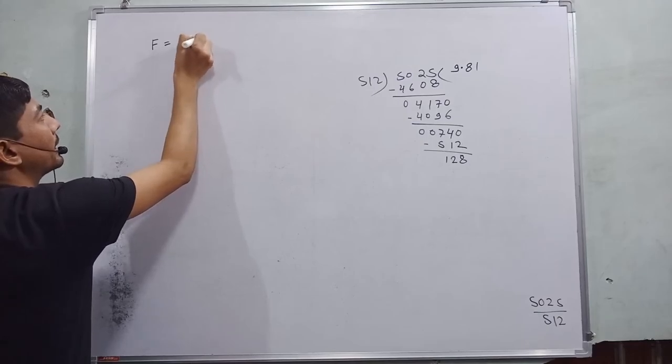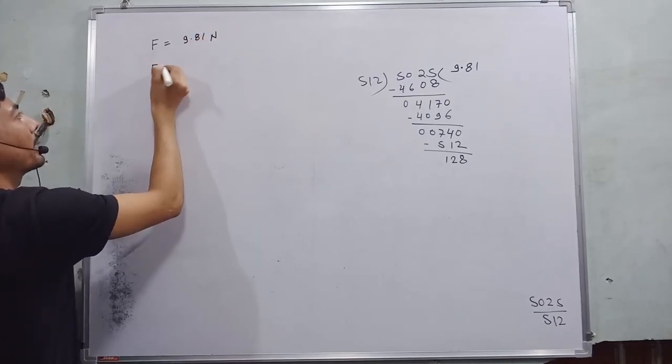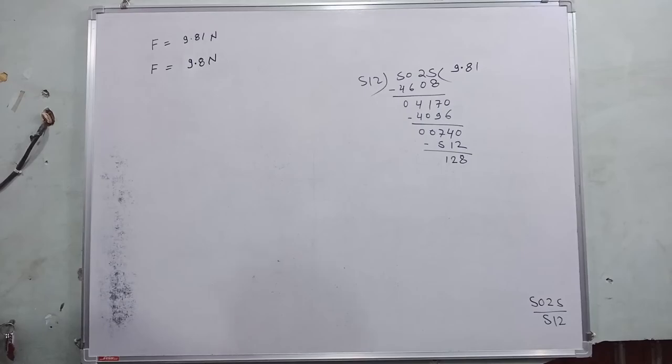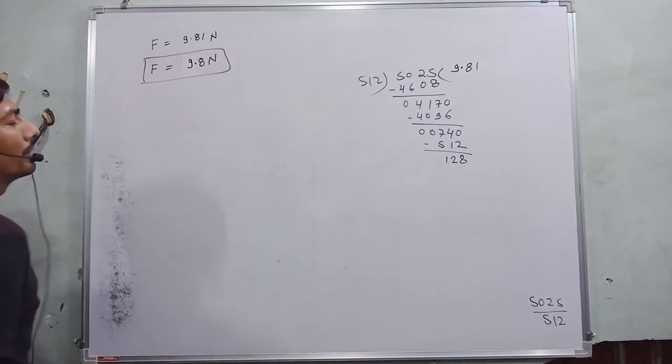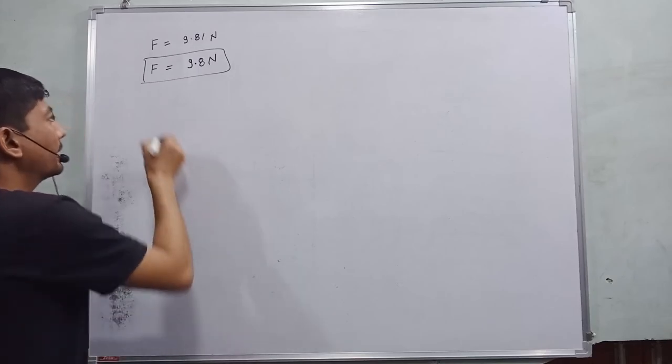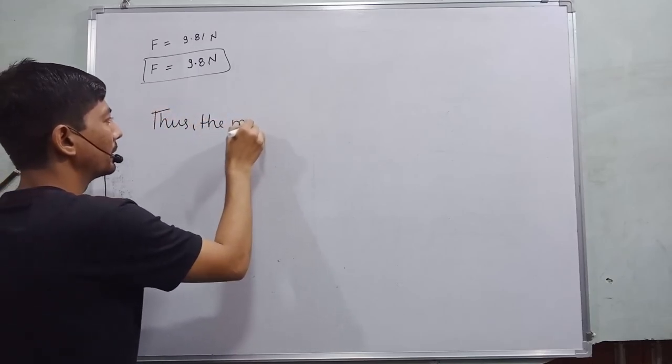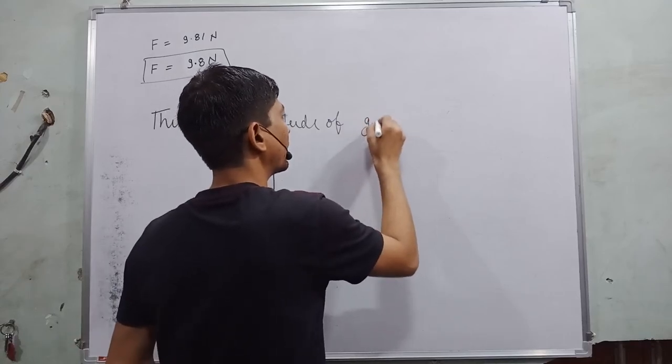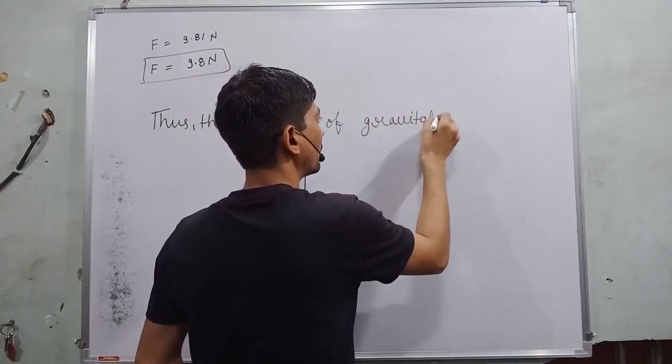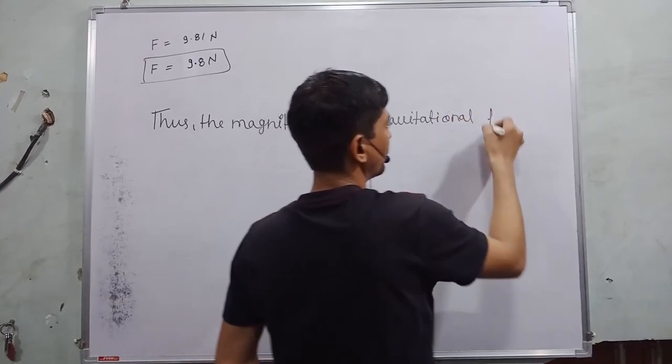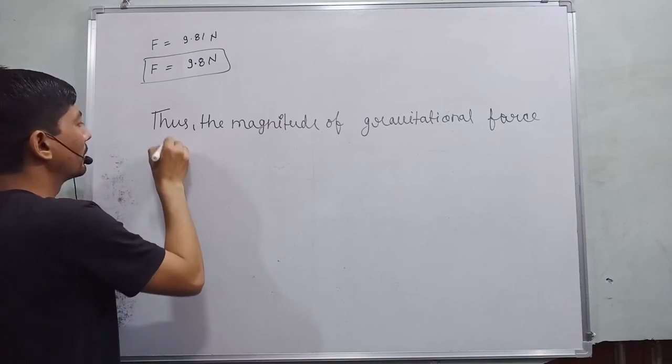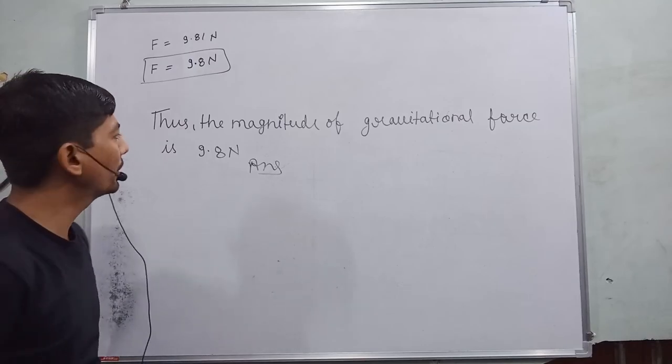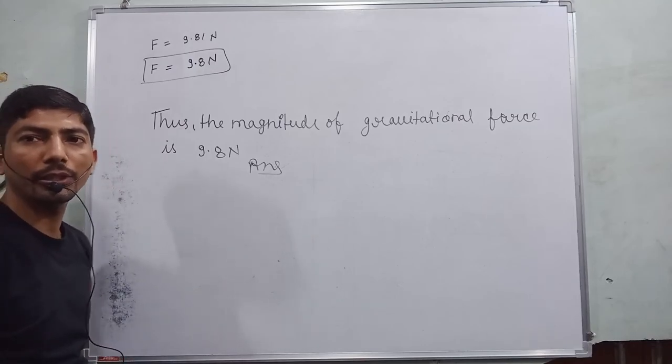So finally we write as force is equal to 9.81 Newton, or we can further say 9.8 Newton. This will be our magnitude of gravitational force. So further we can write the answer. The magnitude of gravitational force is 9.8 Newton. This will be our answer. Thus the magnitude of gravitational force is 9.8 Newton. This will be our answer.